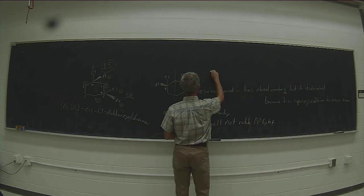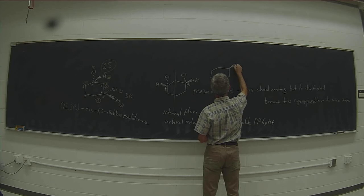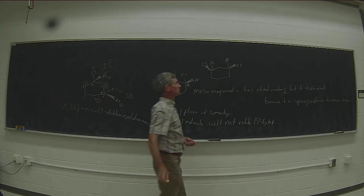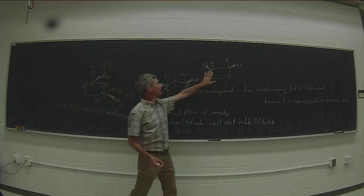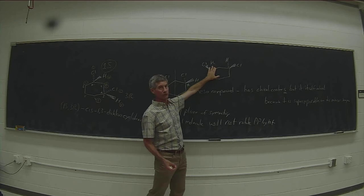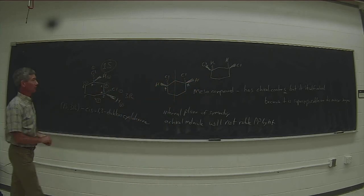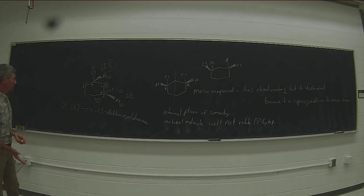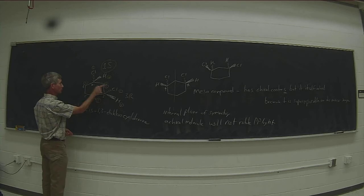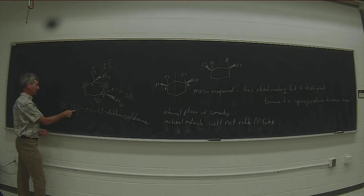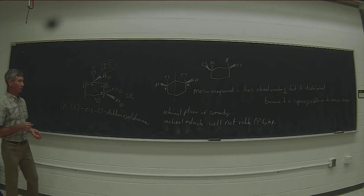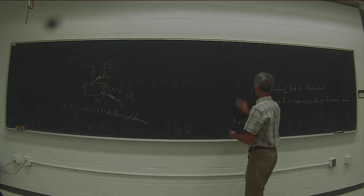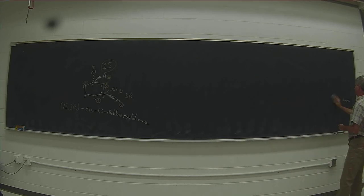If I draw the mirror image of this compound with the two chlorines coming up and the two hydrogens going back, that's the same compound. All I need to do is flip it 180 degrees so the hydrogens that were back come up and the chlorines that were up go back — that's a superimposable mirror image. Any time you have an internal plane of symmetry, the molecule is superimposable on its mirror image and therefore achiral. When a molecule has this kind of symmetry with identical substituents, one stereocenter will be S and the other will be R.